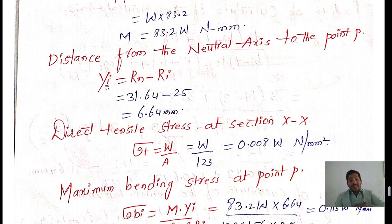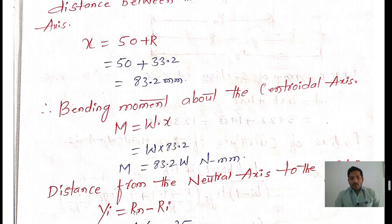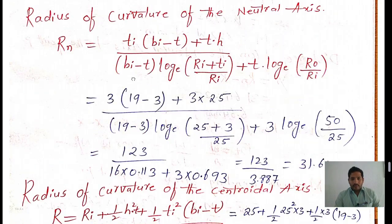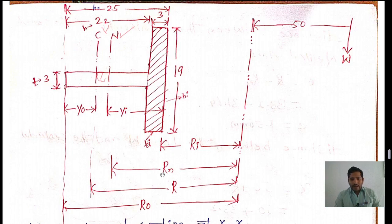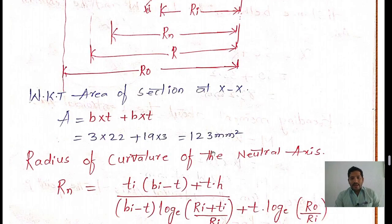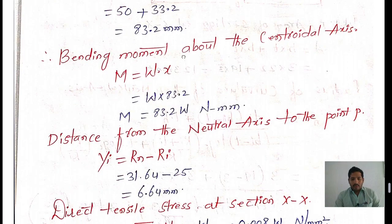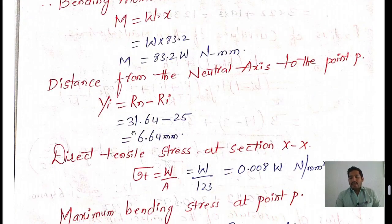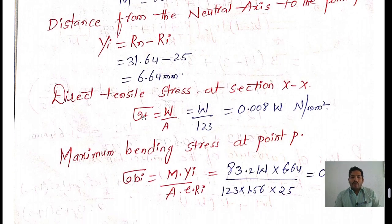Our intention is to find the distance from the neutral axis to the inside fiber, Yi. Using the formula Yi = RN − RI = 31.64 − 25 = 6.64 mm.